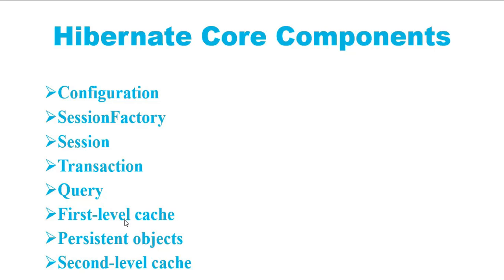The first-level cache is available with the Session object until the Session object is alive. Once the Session object is destroyed, the first-level cache is also destroyed. Persistent objects are POJOs that get persisted as rows in a relational table in the database by Hibernate. They are configured in mapping files and annotated with JPA annotations. I'll show how to create a persistent class or JPA entity in a Hibernate application in further sections.